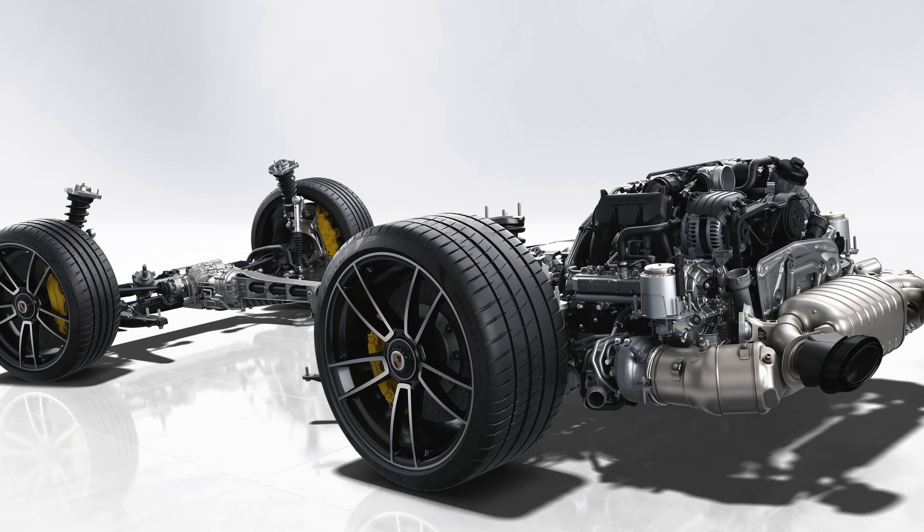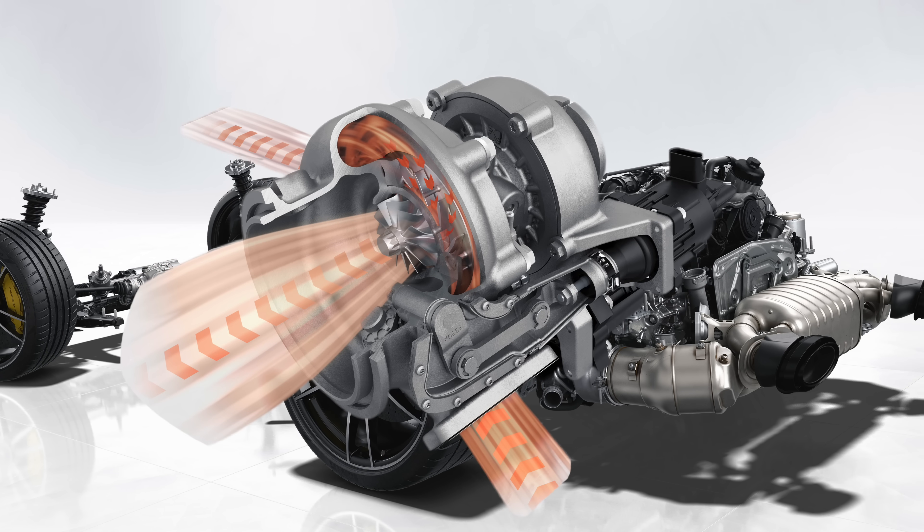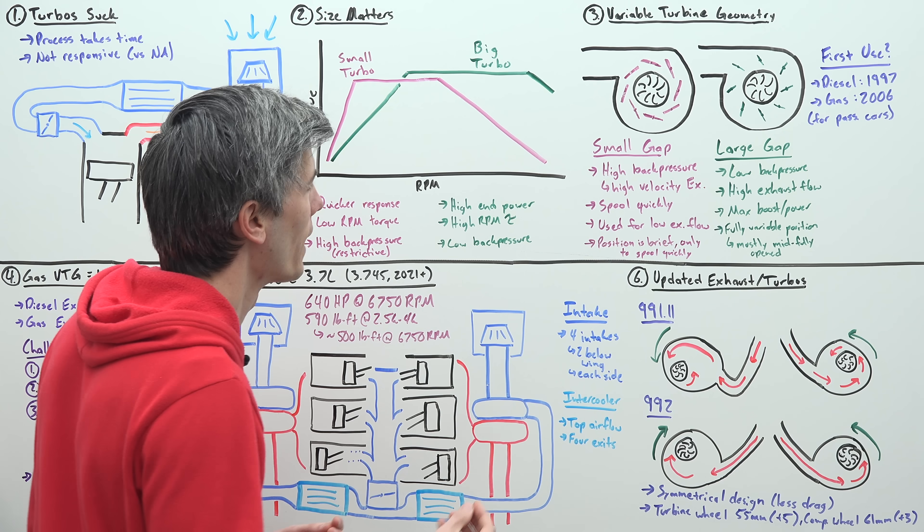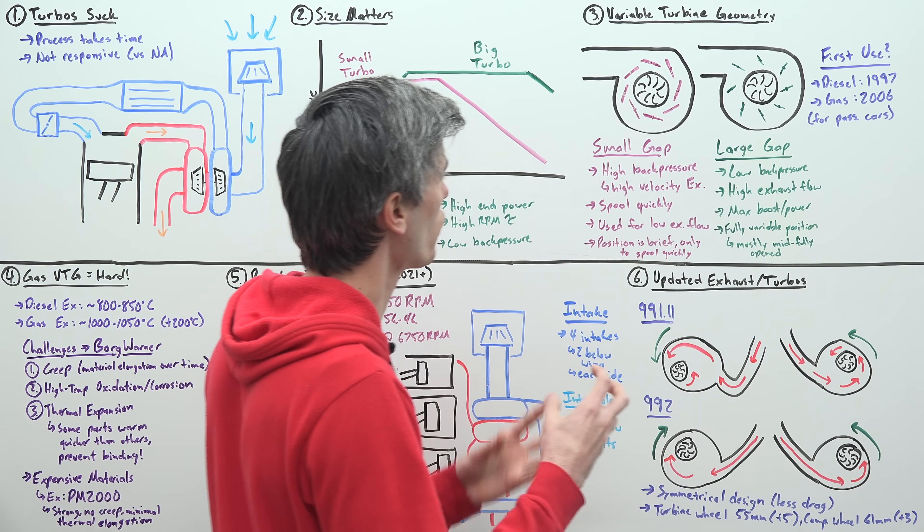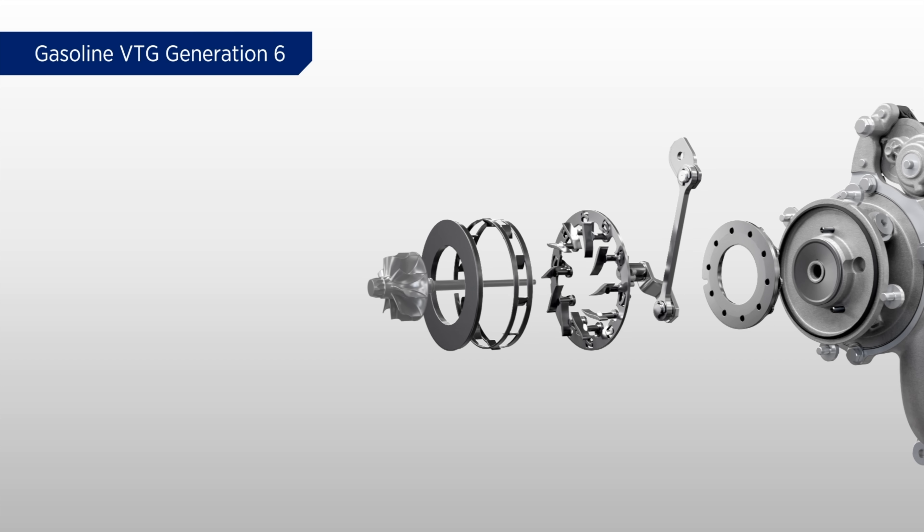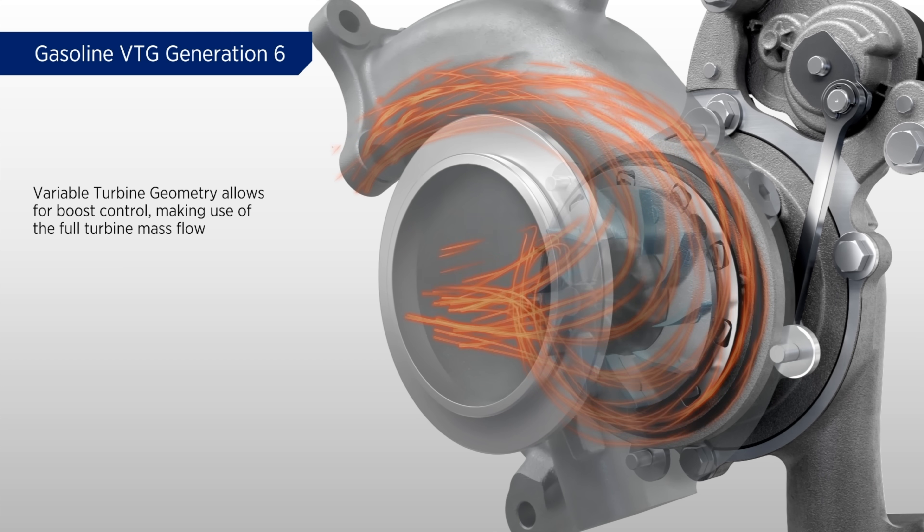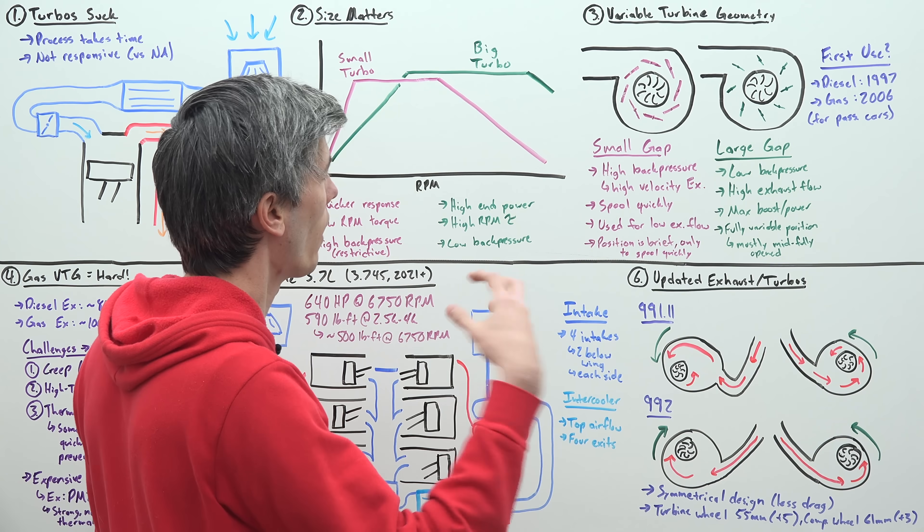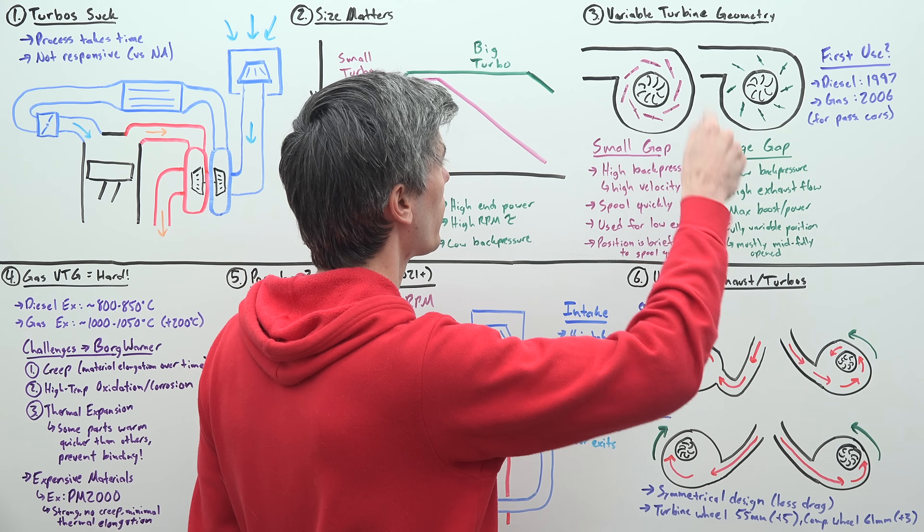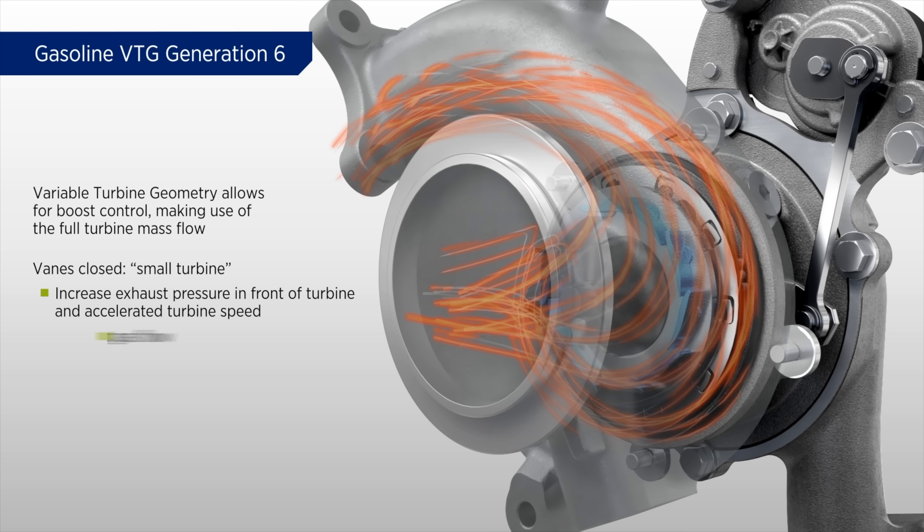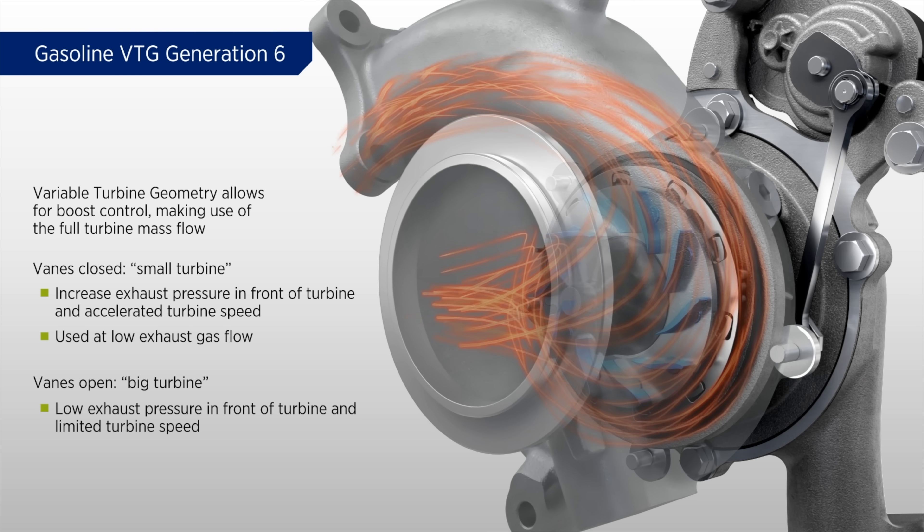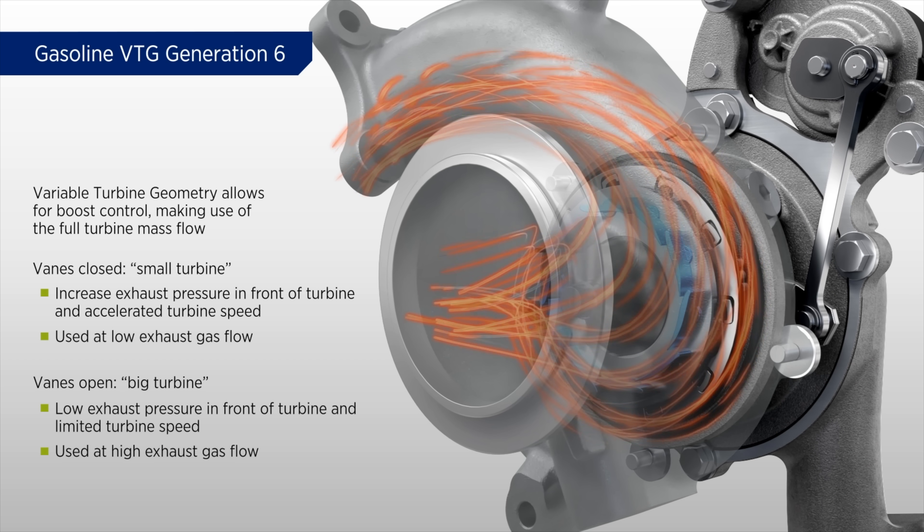What does Porsche do? They use a BorgWarner variable turbine geometry turbo. This turbo has adjustable vanes surrounding that turbine wheel, so you can adjust the angle of these vanes and change the amount of back pressure within the turbo. If you position these vanes with a really small gap, it creates a restriction and forces the air to speed up, spooling up the turbocharger really quickly. Once the turbocharger spools up, you open up those vanes to allow for more space between them, reducing restriction and enabling high power and high flow.